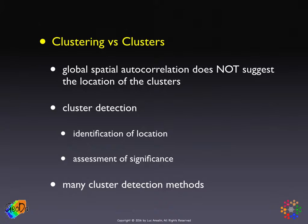As we saw last time, global spatial autocorrelation measures like Moran's I or Geary's C do not suggest the location of the cluster. They only suggest that the null hypothesis of spatial randomness can be rejected. So to know where these clusters are, we need to develop specific methods for what is called cluster detection.